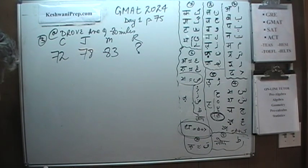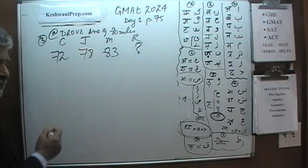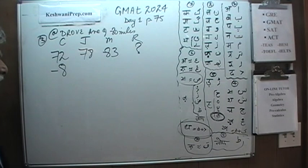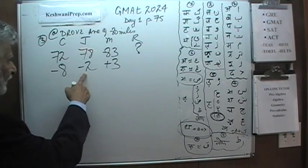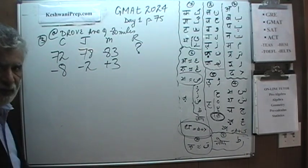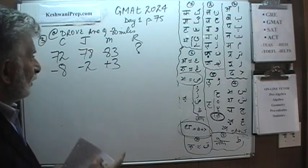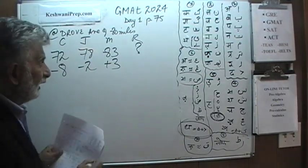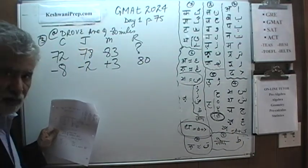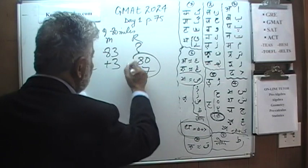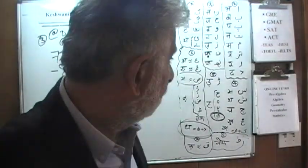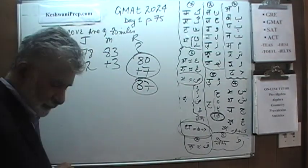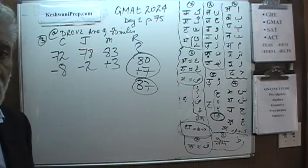The first person is 8 miles short of 80, the second is 2 miles short, and the third is 3 miles over — giving a surplus of 3. So we have a deficit of 10 and a surplus of 3, meaning a net deficit of 7 miles. The fourth person must drive his share of 80 miles and also make up the 7-mile deficit from the other three. He must have driven 87 miles in order for the average to be 80.